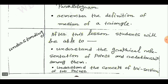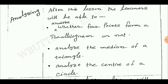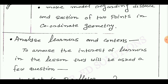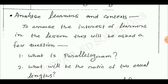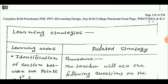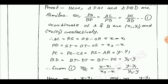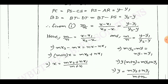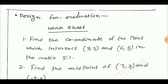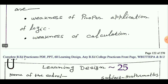Learning design number 24. Learning objectives are shown. Next: analyze learner and context, learning strategy, next evaluation, and last point is diagnosing the weakness.